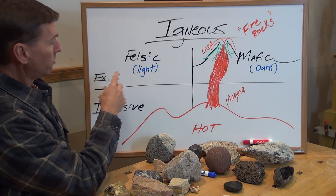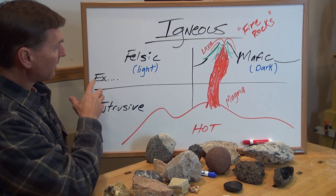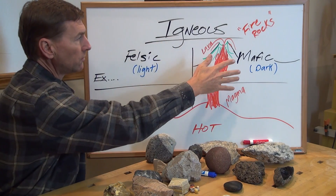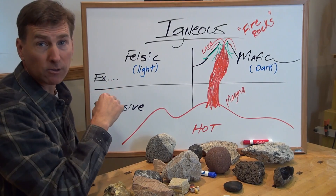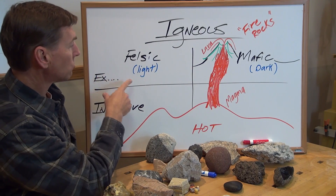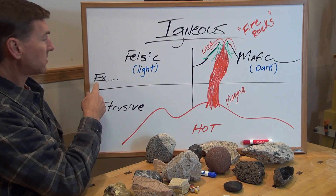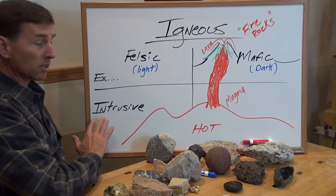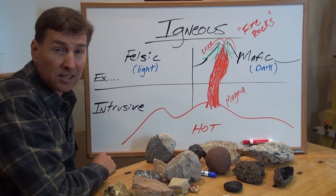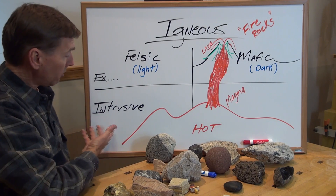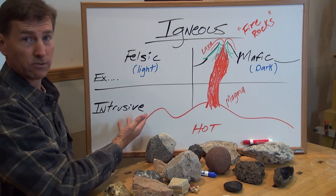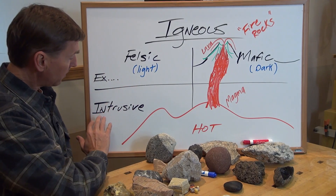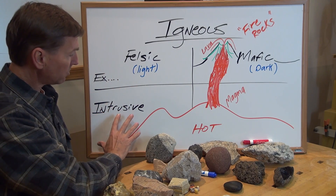Let's move through the two ways you can slice and dice igneous rocks. The first way is it could be a rock on the surface — I call them lava rocks, but the official name is extrusive. X for outside — extrusive. Or you could have rocks formed maybe 10,000 feet beneath the surface of the earth. Those would be called intrusive.